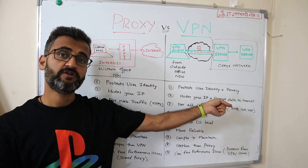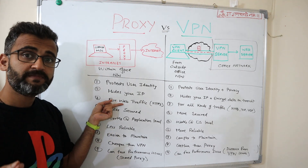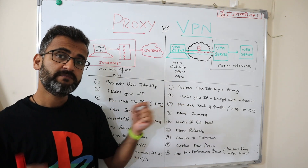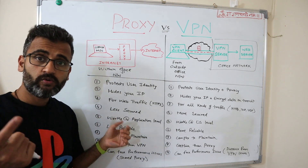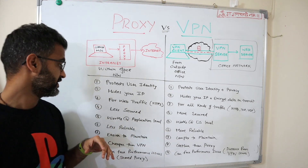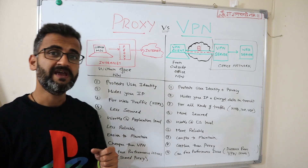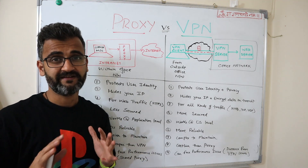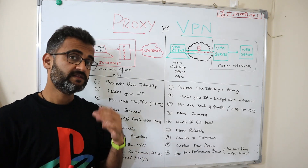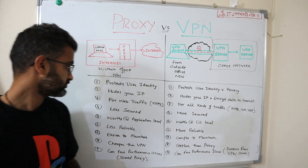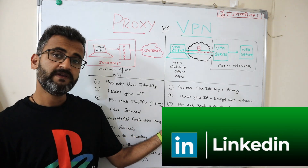A proxy is used mostly for web traffic — HTTP or HTTPS protocols — whereas a VPN can be used for all kinds of traffic including HTTP and UDP, because it works at the OS level. A proxy, by contrast, works at the application layer. Proxies are less secure — they are prone to risk, can be easily broken, and played around with — making them less reliable. A good paid VPN, on the other hand, provides much stronger security.